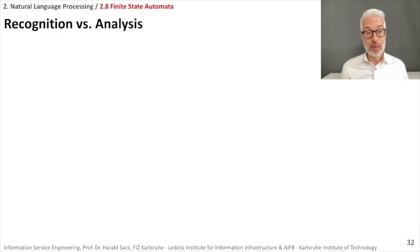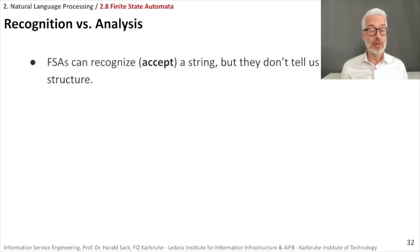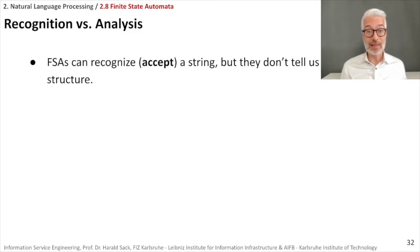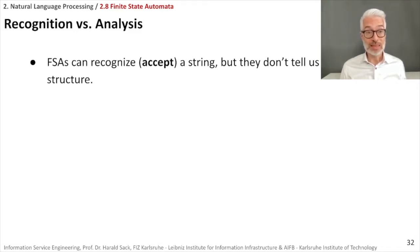Remember the last section of the lecture we talked about finite state automata. An FSA is able to recognize, which means to accept a specific string. However, FSAs are not able to tell us more than just pure acceptance — they can't tell us the internal structure of what they have recognized, like we need in morphological parsing.